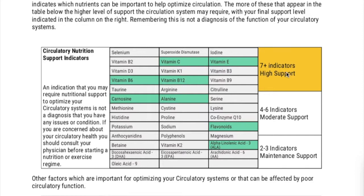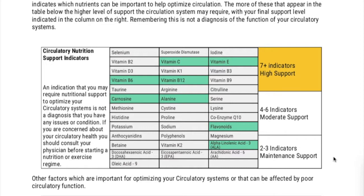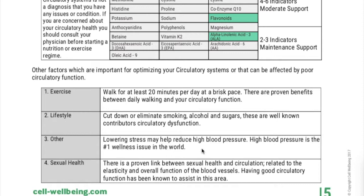In my case I have seven-plus indicators, which are vitamin E, C, B6, and carnosine. All the green ones are the ones I need to increase, and later on in the test we will see if it's a priority, an advice, or just a consideration.